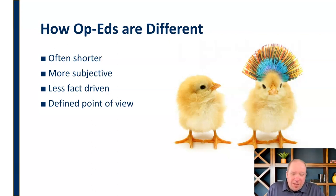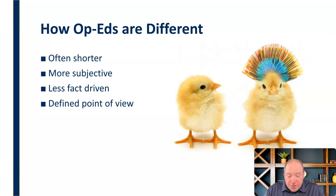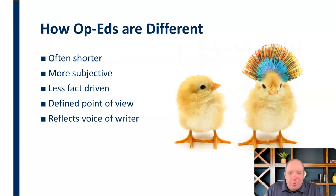Op-eds have a very specifically defined point of view. Traditional journalism defines objectivity as its goal — hard journalism is defined by objectivity. But an op-ed has a very specific point of view, has that subjectivity, and it's clearly stated. There's nothing wrong with having an opinion in journalism, but you should make it clear that this is different from hard news — this is my clearly defined point of view and my opinion. And we have that opportunity to do that in an op-ed.